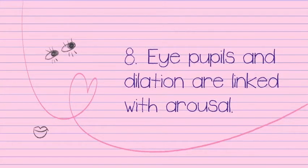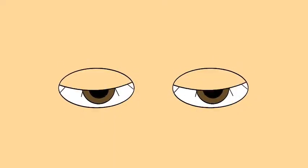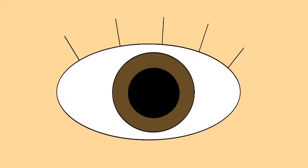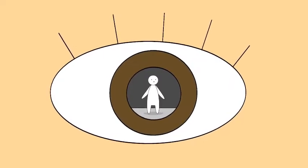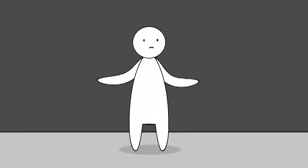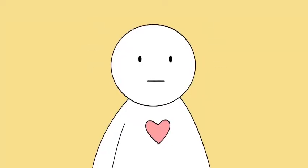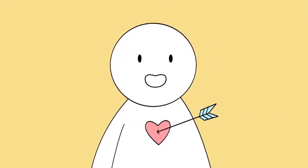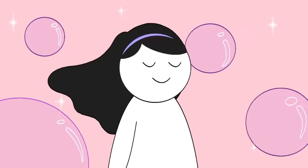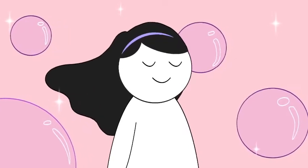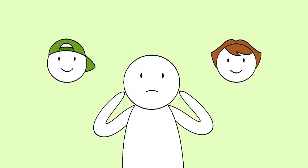8. Eye pupils and dilation are linked with arousal. We all know that eyes are the windows to the soul. But if you stare deep enough into your crush's eyes, you might just get a clue as to whether they're into you. Studies have shown that when people become aroused, their pupils actually dilate. This is actually a pretty good sign of sexual orientation as well. Your eyes will dilate when you look at the gender you are most attracted to.